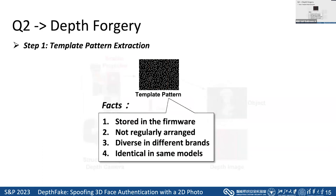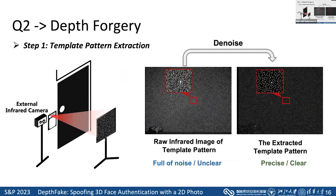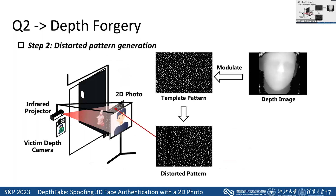Template patterns are stored in firmware and cannot be directly obtained, and the scatter points are not regularly arranged. They are diverse across different brands but identical within the same models. So we use an external infrared camera to capture and denoise the pattern to prevent interference caused by environmental noise. Then we generate the distorted pattern from the template by modulating the depth image into it.